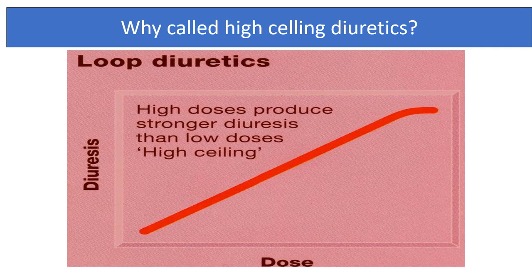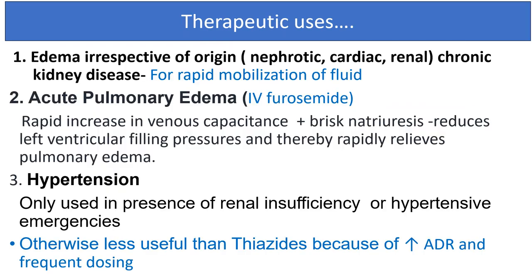Why are loop diuretics called high-ceiling diuretics? Because increasing the dose of the diuretic causes a progressively stronger diuretic effect compared to lower doses. So they are called high-ceiling diuretics.